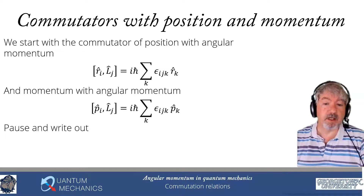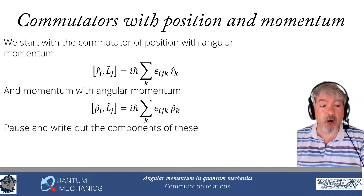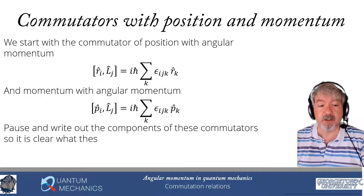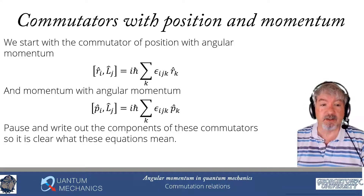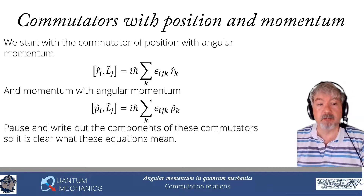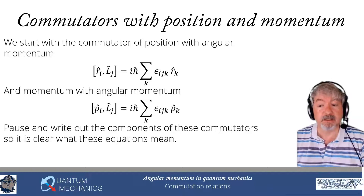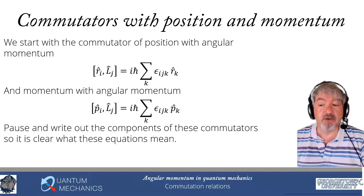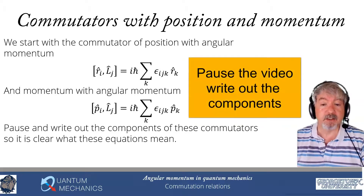I'd like you to pause right now and write out the components of these commutators so you're clear exactly what they mean. Look at, say, rx with Ly. Note your i and j components are always different because when they're the same you get zero — for instance, rx with Lx gives zero because of the completely antisymmetric tensor. Please go through that exercise yourself.